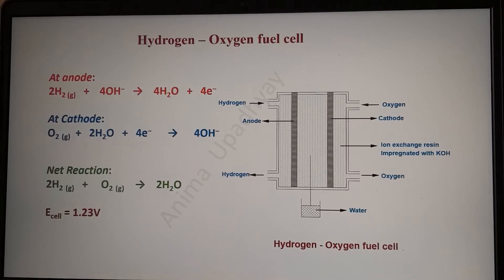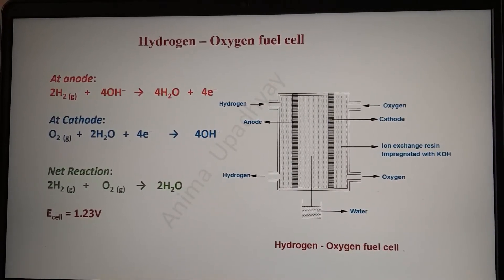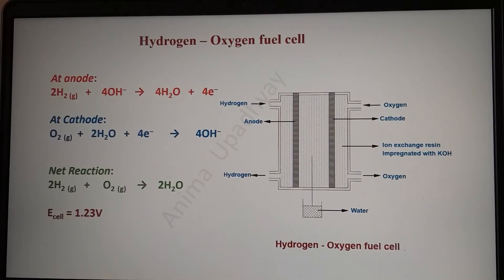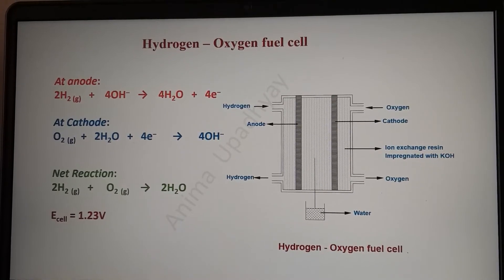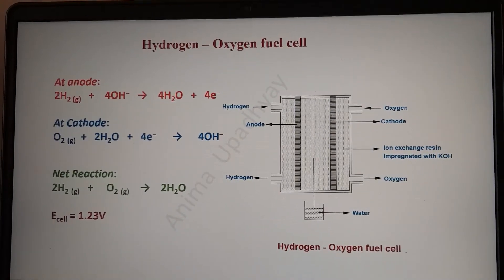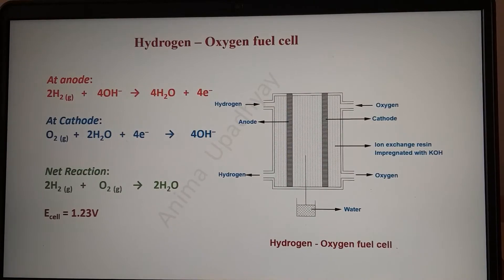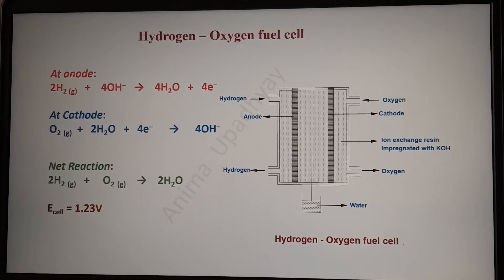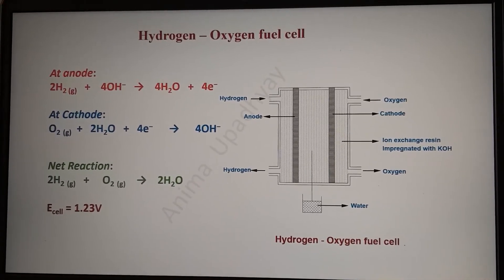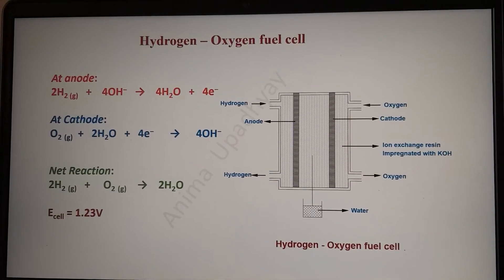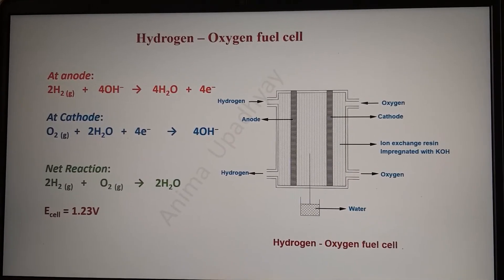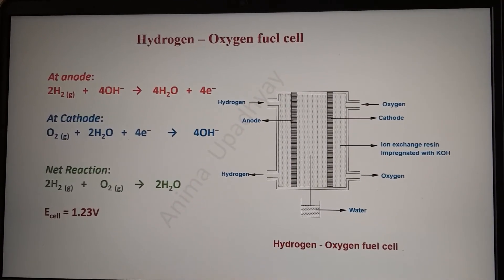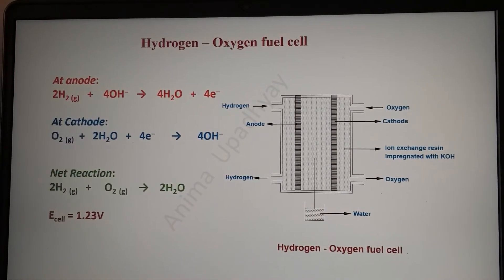In this fuel cell, hydrogen is supplied at the anode and oxygen, which is the oxidant, is supplied at the cathode. You can see the reactions taking place at the anode and cathode. The anode accompanies oxidation and produces water with the loss of electrons, which are accepted at the cathode, resulting in the formation of hydroxyl ions — that is, the reduction of oxygen. The net cell reaction is the reaction between hydrogen and oxygen, which produces water, and water is non-toxic.